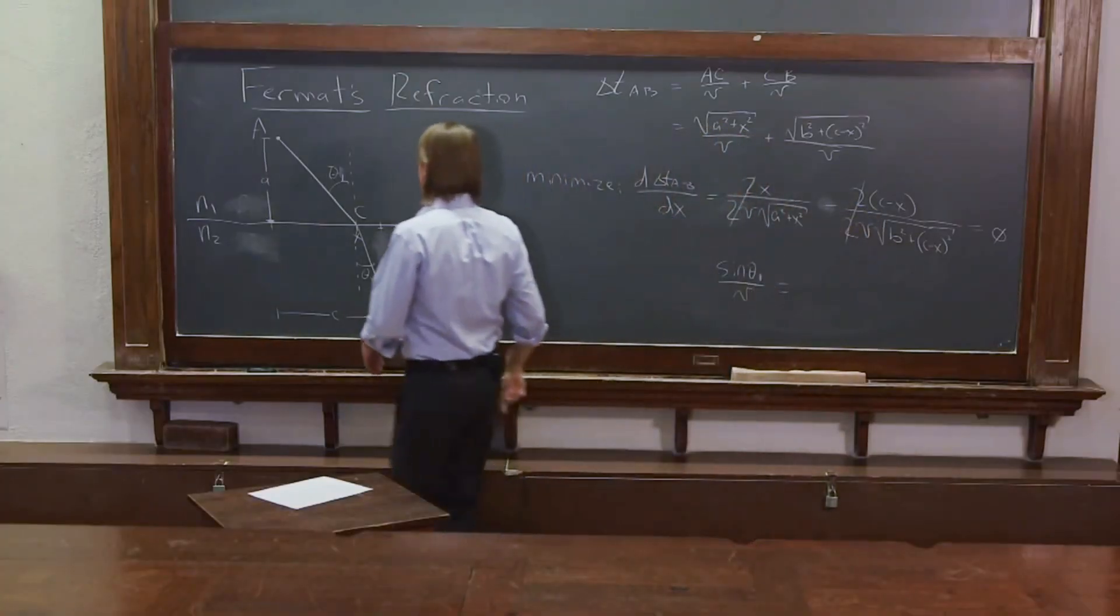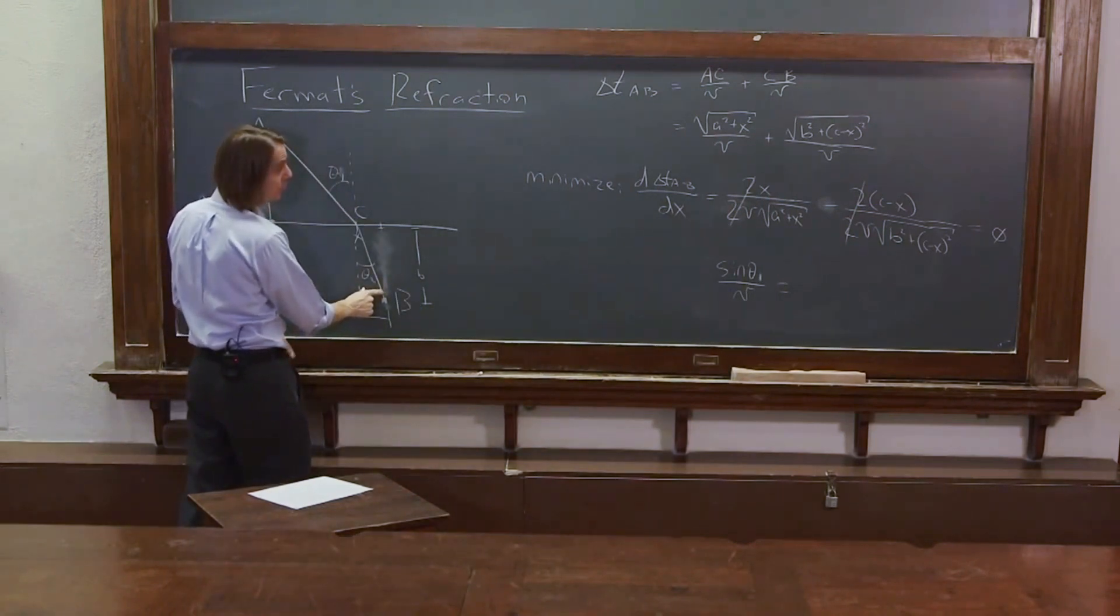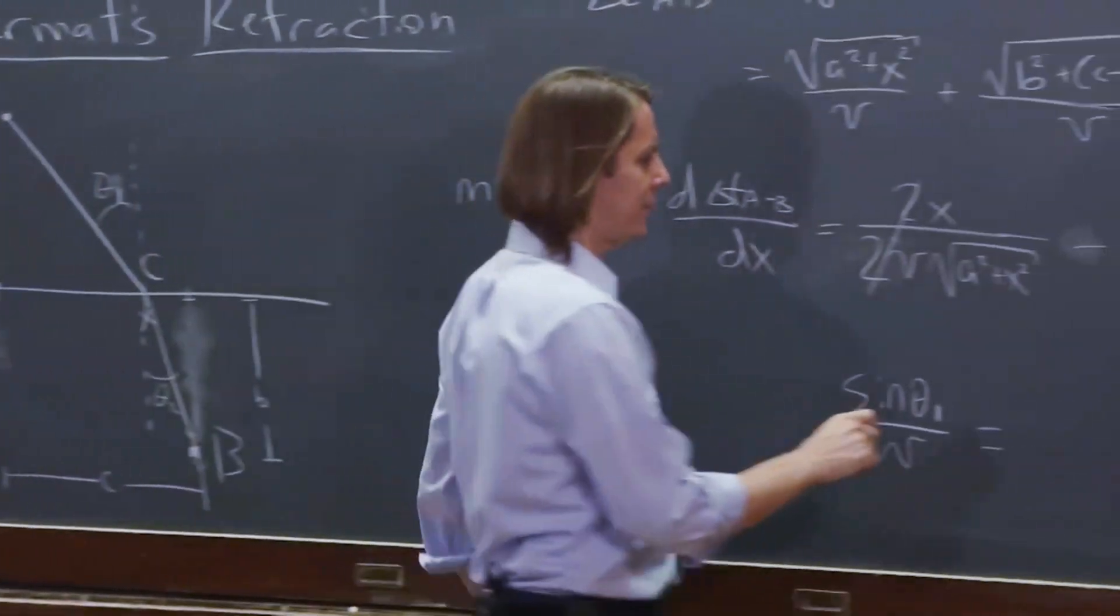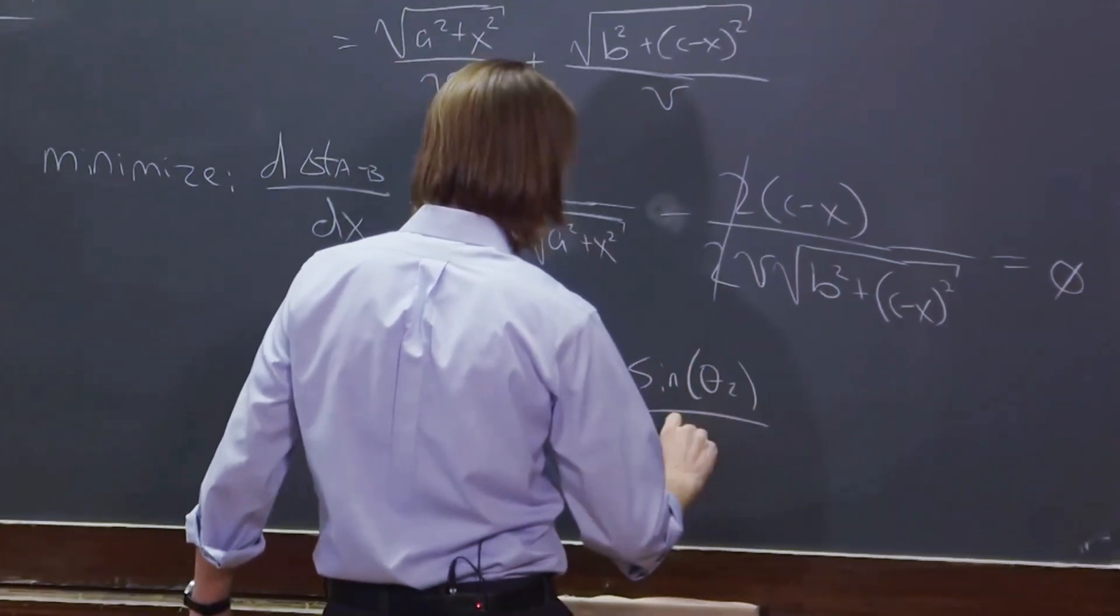And this one is the C minus X. It's basically that position over the hypotenuse. So it's also the sine of that angle. So that's sine theta 2 over V.